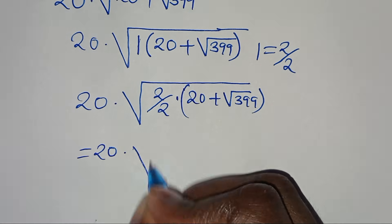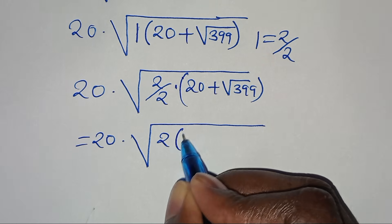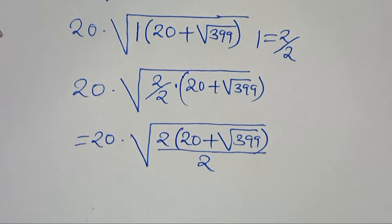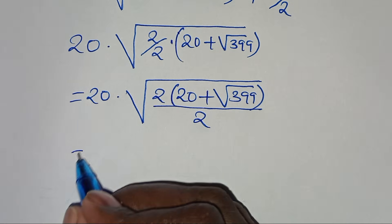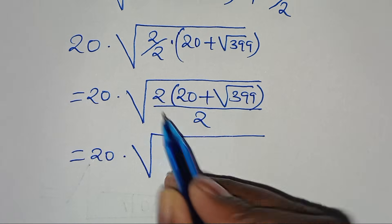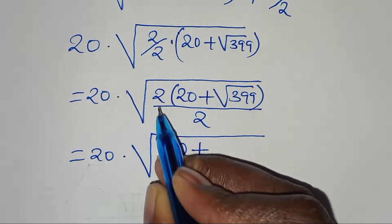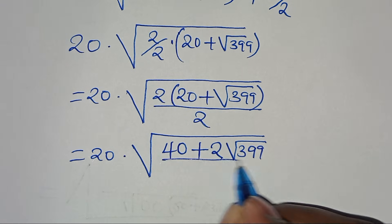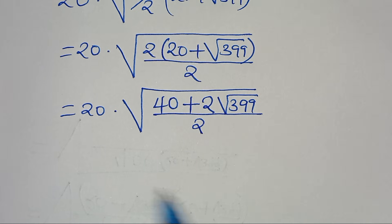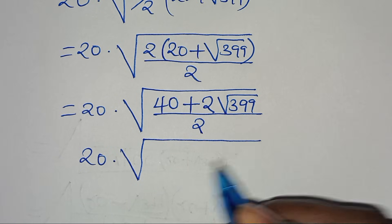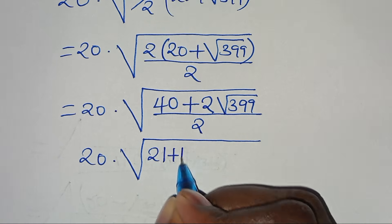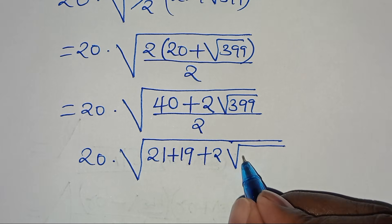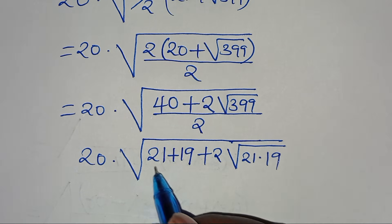So let's open the parentheses: we have 20 times square root of 2 times 20, plus 2 times square root of 399, which is 2 times square root of 399, everything divided by 2. The next step is to express 40 as 21 plus 19, then plus 2 multiplied by square root of 399, which is the square root of 21 times 19, everything divided by 2.